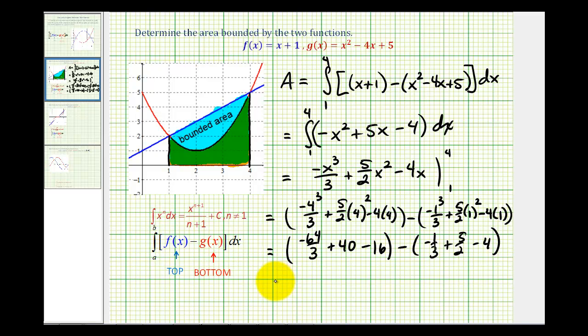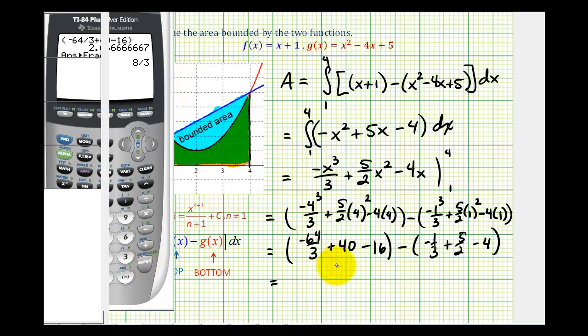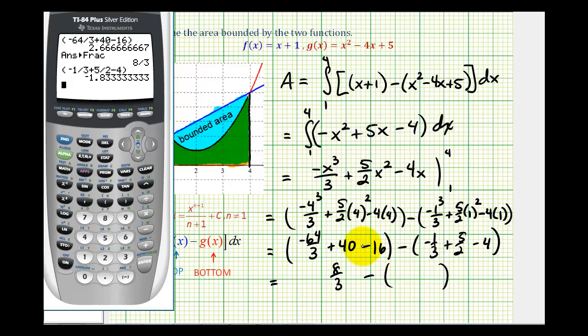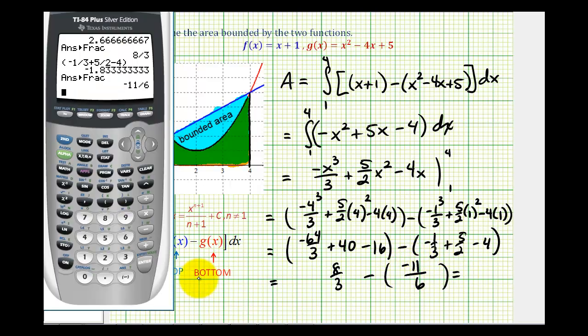And we'll do the rest on the calculator. So this is 8 thirds. And this is negative 11 sixths. So we'll have 8 thirds minus negative 11 sixths. So the area of the bounded region is 4.5 or 4 and a half.